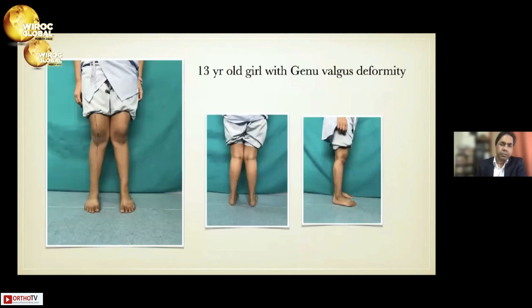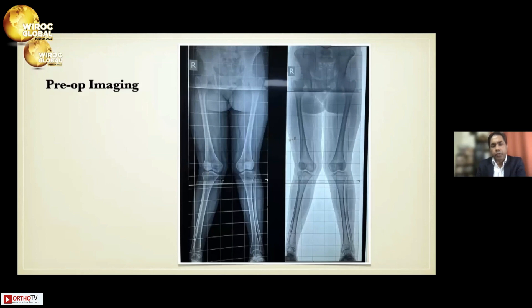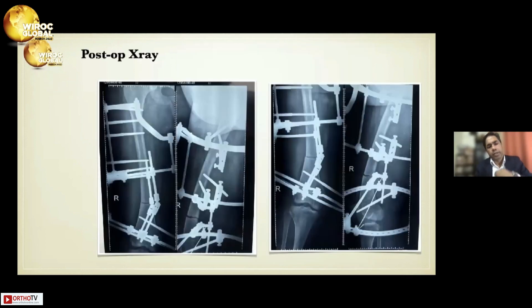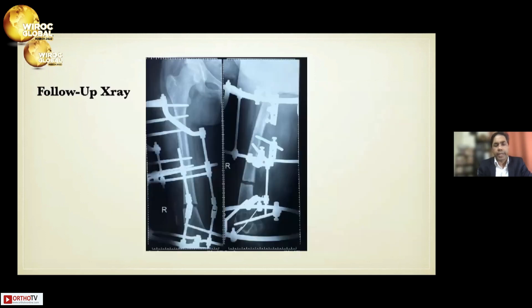Case four: a 13-year-old girl with bilateral genu valgus, deformity mainly in the distal femur. CT scan confirmed fusion of growth plates, so guided growth was not possible. I applied an Ilizarov frame and performed a corrective osteotomy with gradual correction. Follow-up X-rays showed significant deformity correction, and she is still in follow-up.